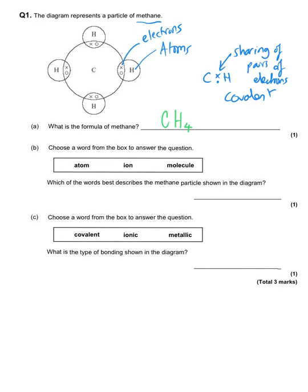The next question: which of the words best describes a methane particle shown in the diagram — atom, ion, or molecule? The correct answer is molecule, and the reason is that the definition is two or more atoms bonded together. An atom is just a single thing, and an ion is not necessarily a single thing or a molecule — it could be either — but crucially for an ion it needs to be positive or negative, and we don't have any positives or negatives on show, so it is definitely not ionic.